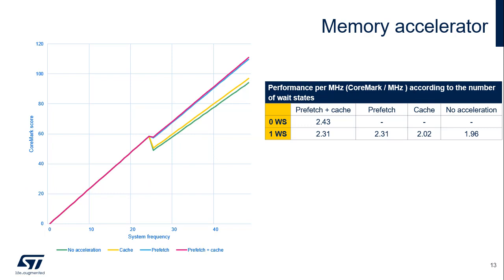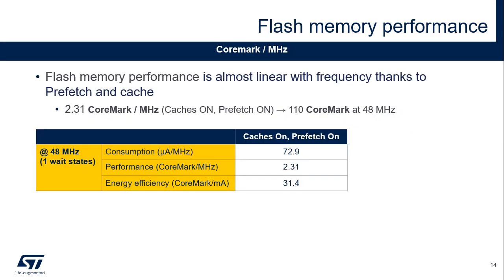The performance continues to increase linearly with the frequency when accelerators are enabled — i.e., prefetch buffer and instruction cache. The slope of the curve related to prefetch on and cache on is almost not affected by the transitions from 0 to 1 wait states achieved at 24 MHz. From 0 to 24 MHz, enabling the prefetch buffer and the instruction cache doesn't improve the performance. However, enabling the prefetch buffer and instruction cache contributes to reducing consumption due to flash memory accesses.